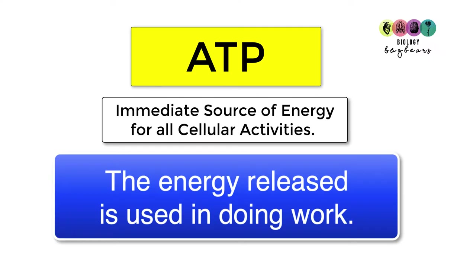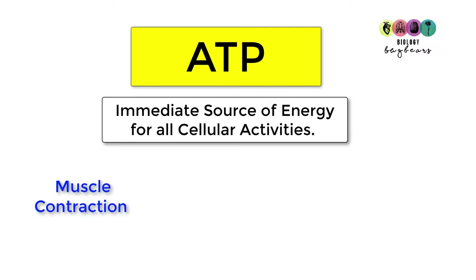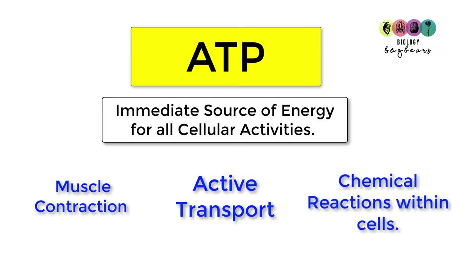When ATP is broken down, energy is released and used by the cell for specific work. For example, it could be mechanical work such as muscle contraction, transport such as active transport where substances are moved across membranes, or chemical reactions within the cell — those anabolic building reactions that require energy input.